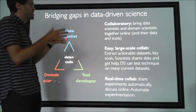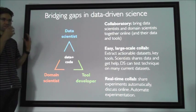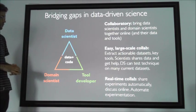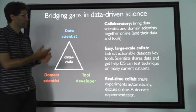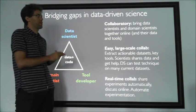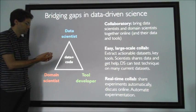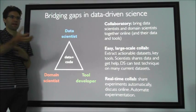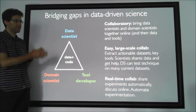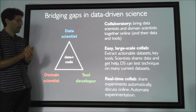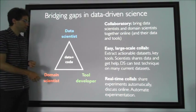Ultimately, the goal is to bridge these gaps in data-driven science. We want to bring the data scientists, the domain scientists, and the tool developers together on the same platform so they can help each other — getting rid of all these gaps, creating just one community. We can create a collaborative online platform where domain scientists and data scientists can work together. Domain scientists can upload their datasets, and data scientists can look at them and try their algorithms. With results, the domain scientist can see what the data science community is doing and see which models are good to try.